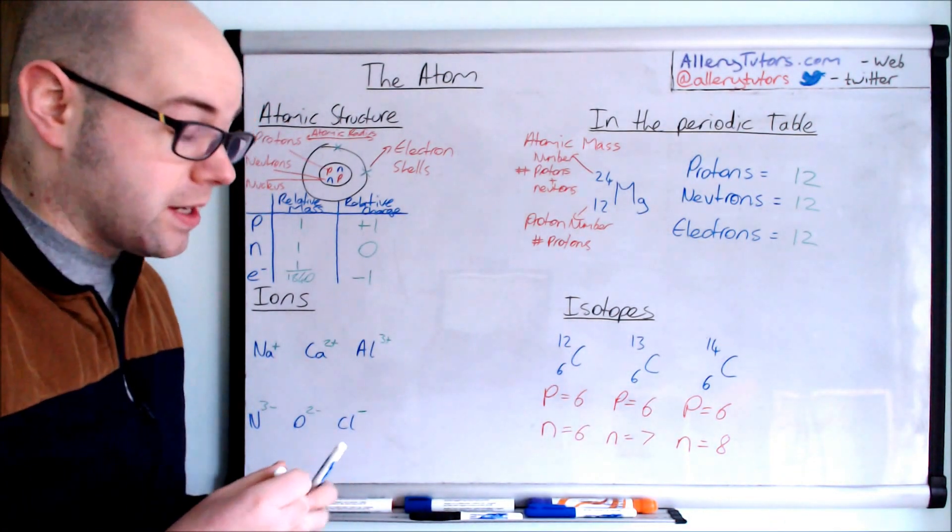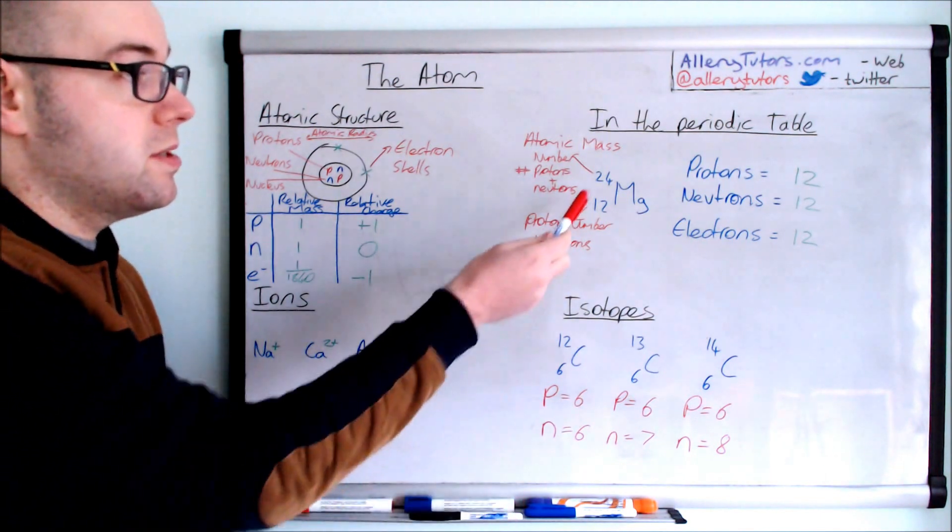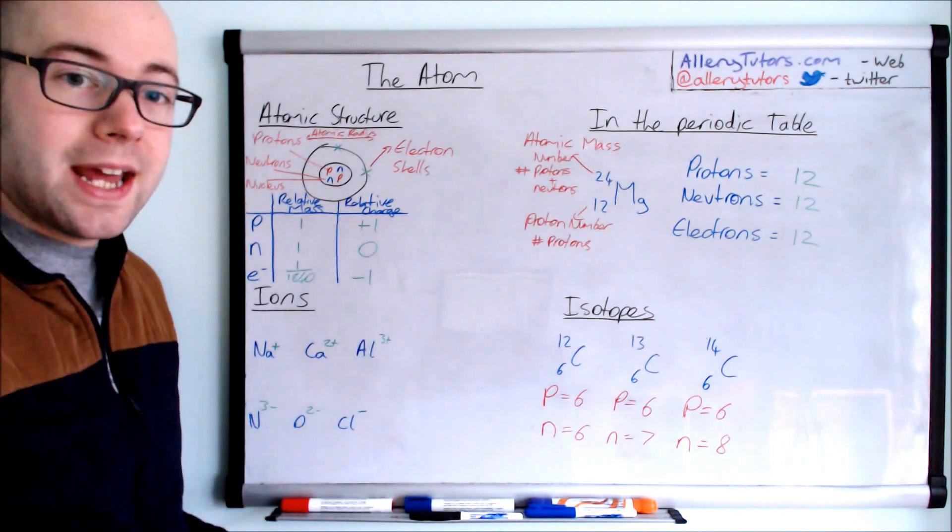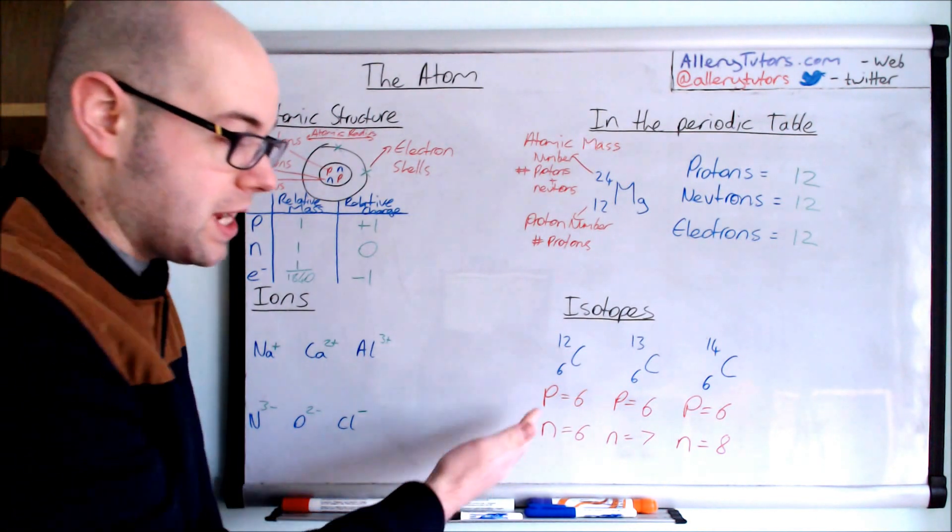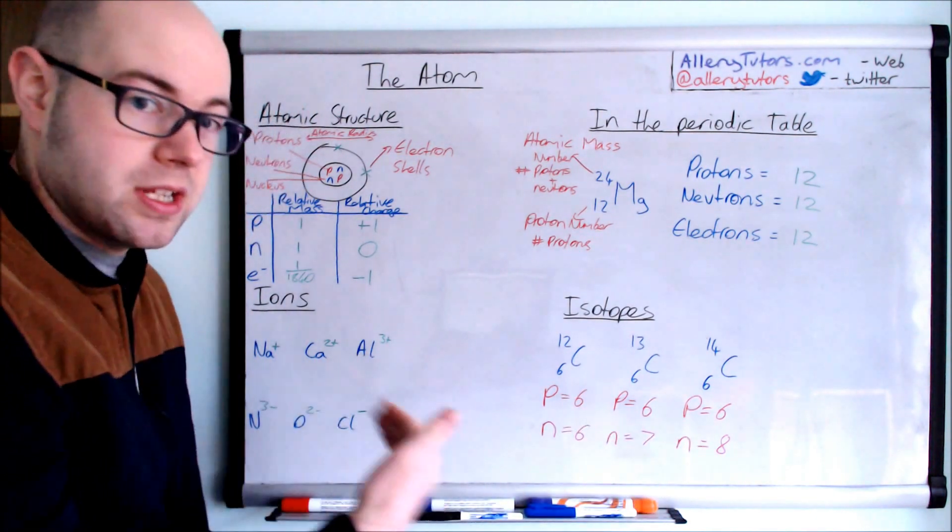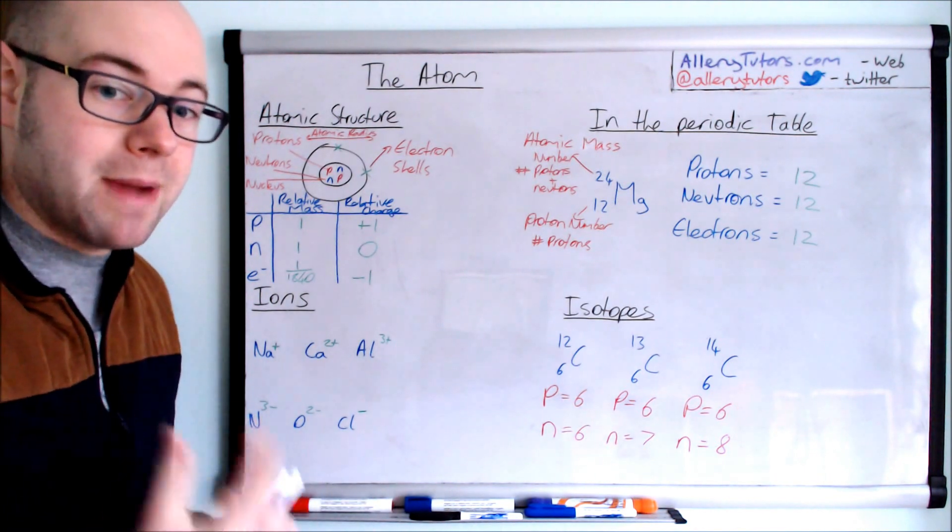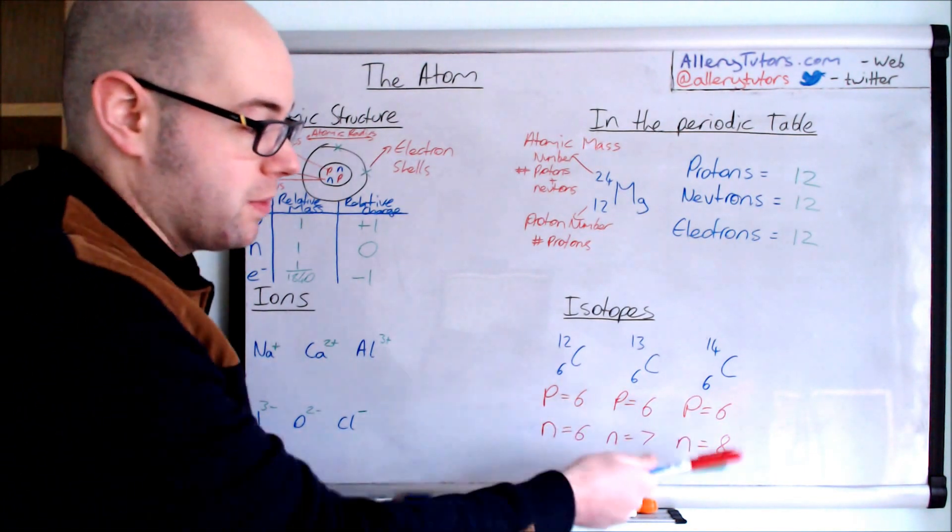Now, carbon in the periodic table, this number here, the atomic mass number, is an average of the isotopes that make them up. So if we take the abundance, the relative abundance of each of these isotopes, and abundance means the amount of them, then we can add them up.